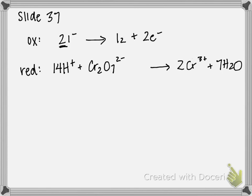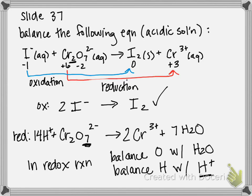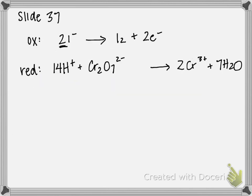For the reduction, we go back to our original slide. Chromium is going from plus six to plus three. So that's a total of three electrons transferred. But since we have two chromiums, this reaction is happening twice. So three times two would be a total of six electrons transferred.